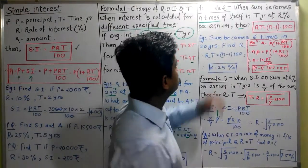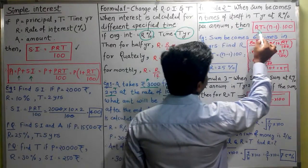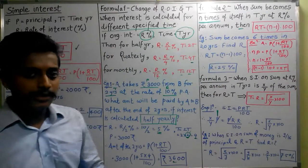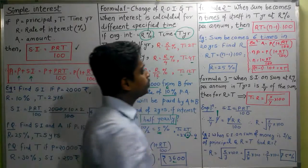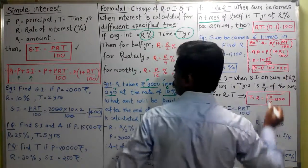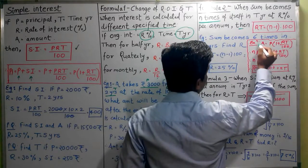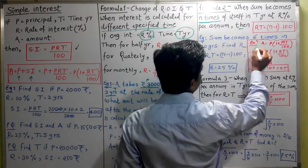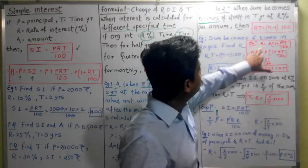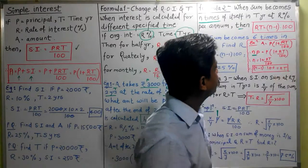Formula 2: When sum becomes N times of itself in T years at R percent per annum, then RT is equal to (N minus 1) into 100. How this formula came, I have written the explanation here. We have the basic formula: A is equal to P times (1 plus RT upon 100). What is happening here? Sum becomes N times of itself. N times means NP, which is equal to P times (1 plus RT upon 100).